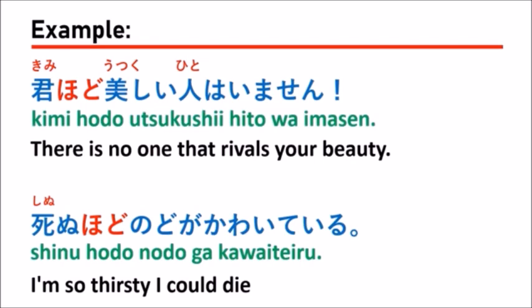The second example is 死ぬほど渇いている, which means 'I'm so thirsty I could die.' Here, 死ぬ (shinu) is the verb in dictionary form, so we can use the verb directly with hodo, expressing the extreme degree of thirst.